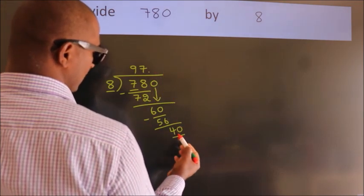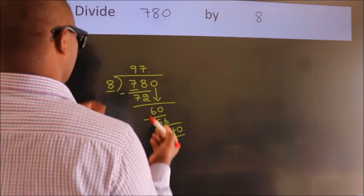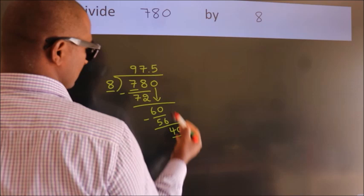So, 40. When do we get 40? In 8 table, 8 fives 40.